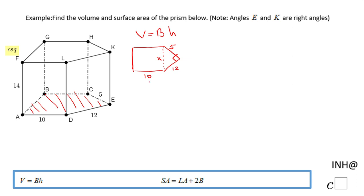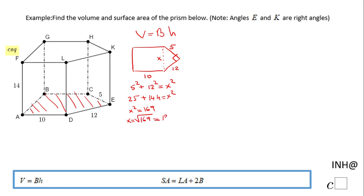That is a right triangle, so I'm going to have a² which is 5², plus b² which is 12², equals c² which is x². 5² is 25, 12² is 144, equals x². If we add 25 and 144 we get 169, so for finding x we just take the square root of 169, which is 13.